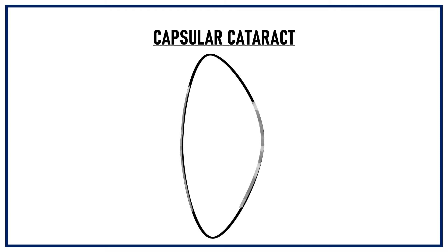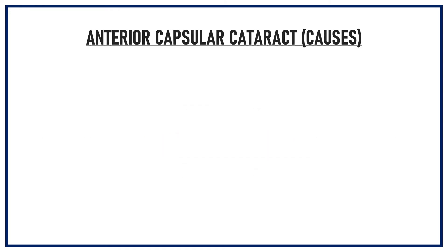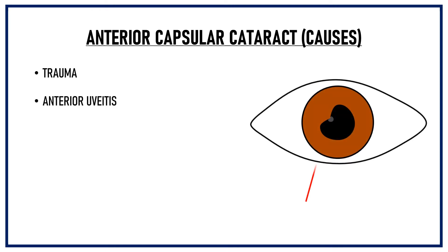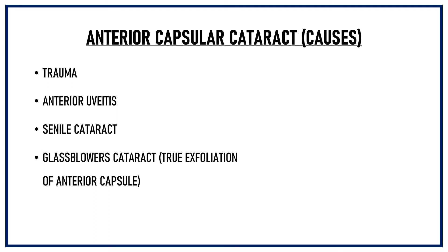When the opacity involves the lens capsule, it is known as a capsular cataract. Capsular cataract can be an anterior capsular cataract or a posterior capsular cataract. It can occur due to trauma, or sometimes anterior uveitis when posterior synechiae are present and cataract develops where the iris gets attached to the lens capsule. Localized capsular opacities can also occur sometimes with senile cataract. Glassblower's cataract develops when capsular thickening and delamination occurs due to heat exposure — it is also known as true exfoliation of the anterior capsule. Localized thickening is also seen in many syndromes like Lewis syndrome and Miller syndrome.